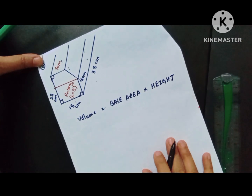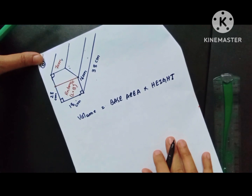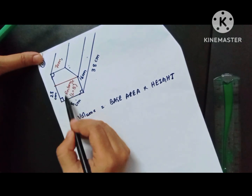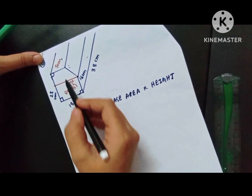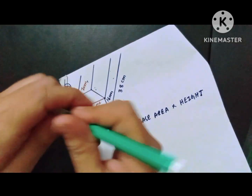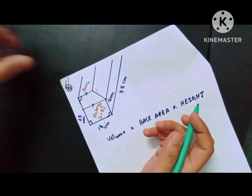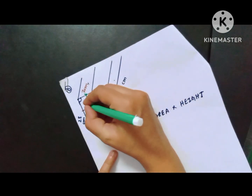For a pentagon, in our book there is no formula which we can directly apply. So what we will do is divide the pentagon into two parts. We will make a straight line — so one part is a rectangle. And for the next part, this line and this line are parallel to each other.